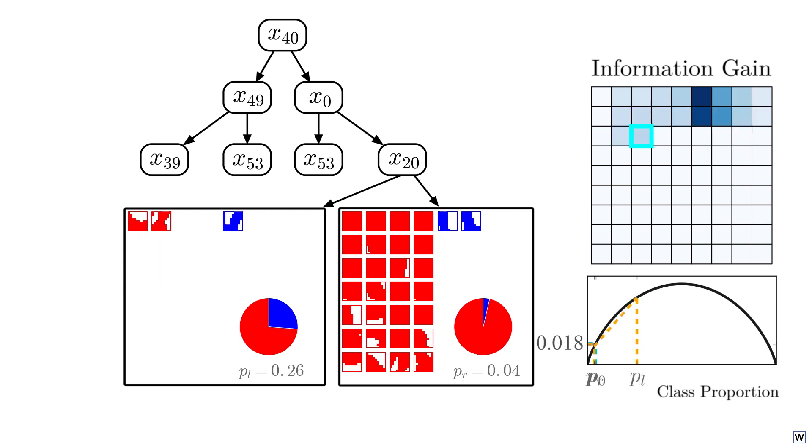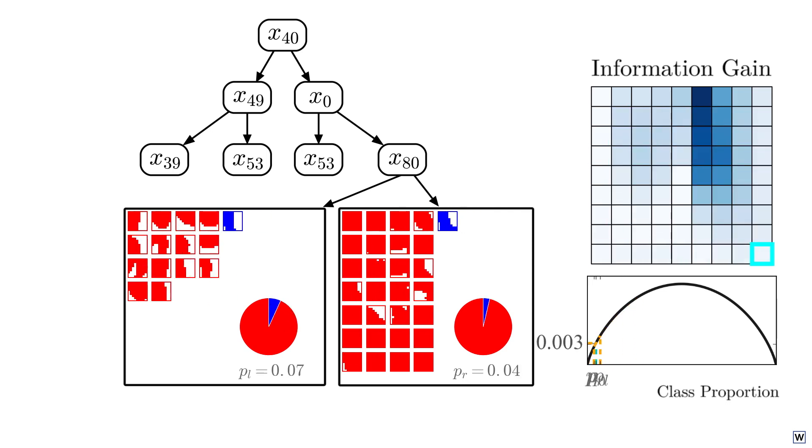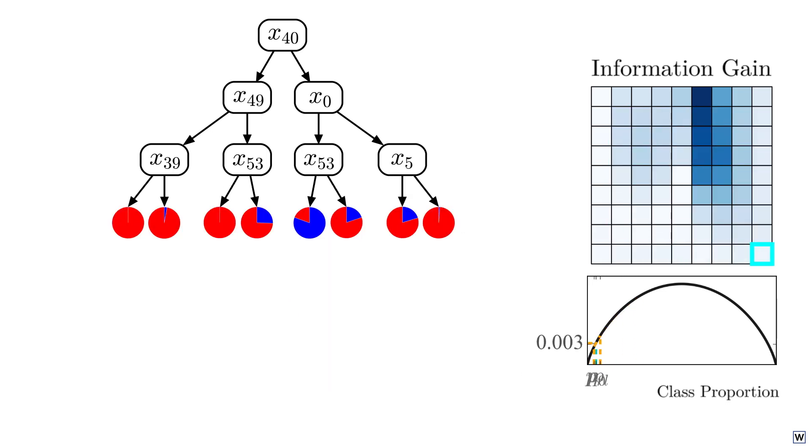Now we could grow our tree to whatever depth we would like, but for now let's stop at three. Notice that all of our leaves end up with a majority of negative examples, except for one. Following our majority class labeling strategy, we'll call examples that end up in any of our majority negative leaves non-fingers. And we'll call examples that end up in our majority positive leaf fingers.